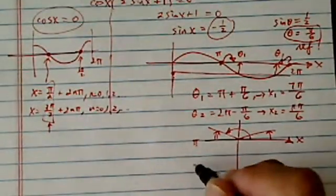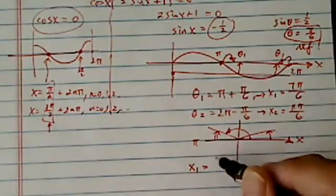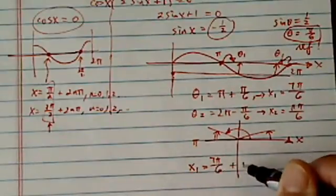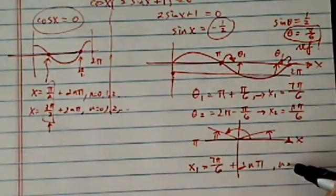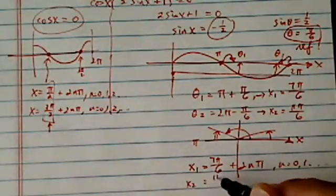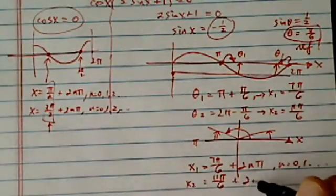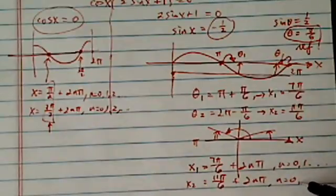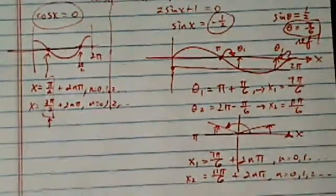All right, now to be complete on this one, x1 is equal to 7 pi over 6 plus 2n pi, n equal to 0, 1, so on and so forth. x2 is equal to 11 pi over 6 plus 2n pi, n equal to 0, 1, 2, so on and so forth. Okay, that's how we solve this problem.